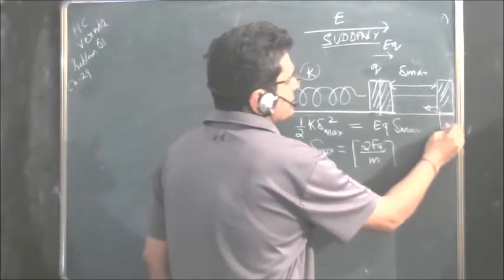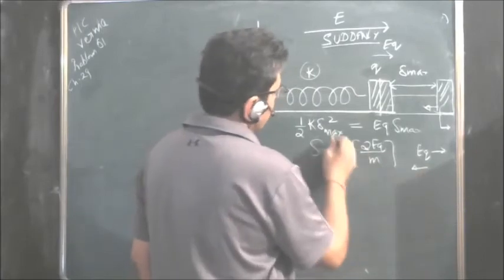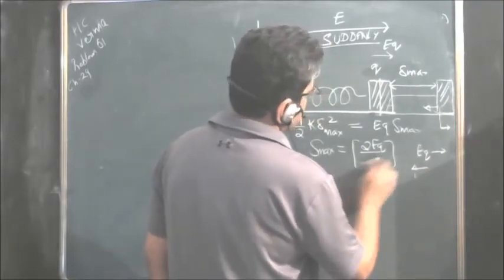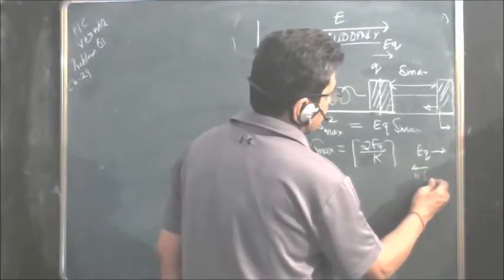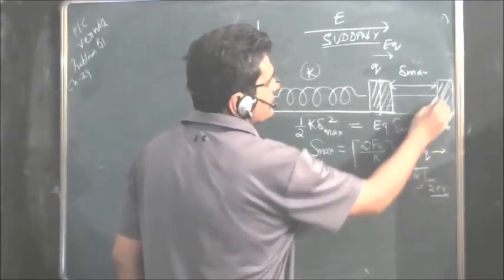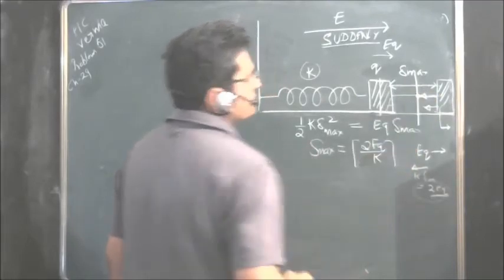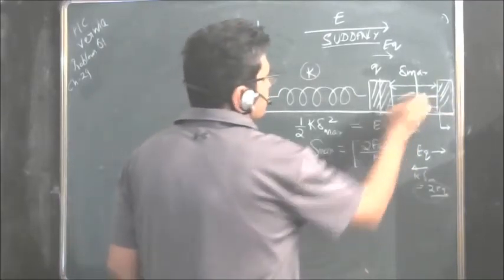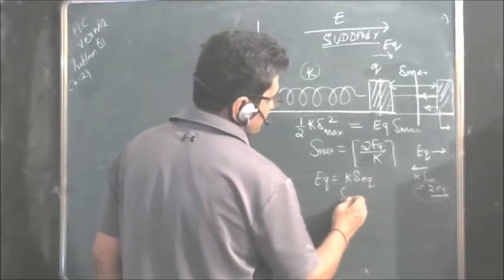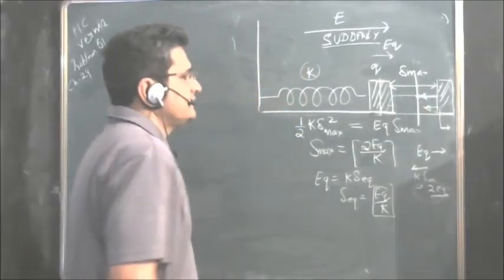At delta maximum, the force towards the right is EQ and the spring force is K times delta maximum, which equals 2EQ — so net force acts backwards. The mass comes back, and the net force becomes zero when EQ equals K times delta equilibrium, giving delta equilibrium equal to EQ upon K.